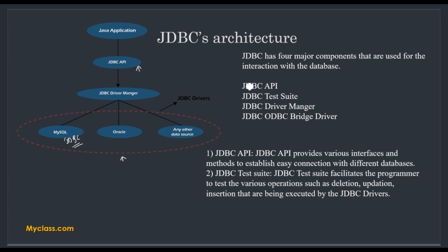There are four major components: JDBC API, JDBC test suite, JDBC driver manager, and JDBC-ODBC bridge driver. JDBC API provides various interfaces and methods to establish easy connection with different databases. Inside this API we write the instructions for connection, statements, query execution, and also for closing the connection.